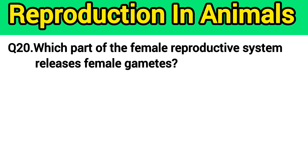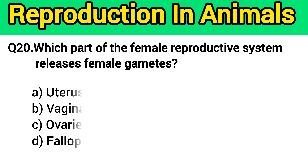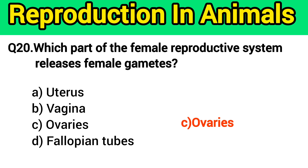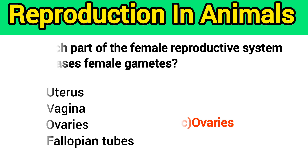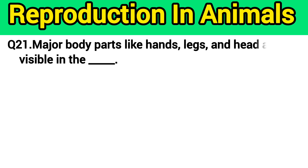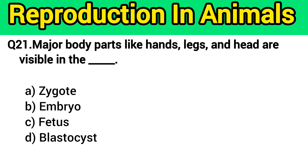Question number 20: Which part of the female reproductive system releases female gametes? The right answer is option C — ovaries. Question number 21: Major body parts like hands, legs, and head are visible in the — the right answer is option C — fetus.